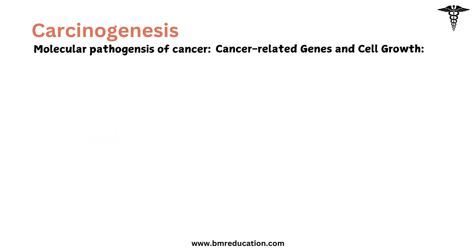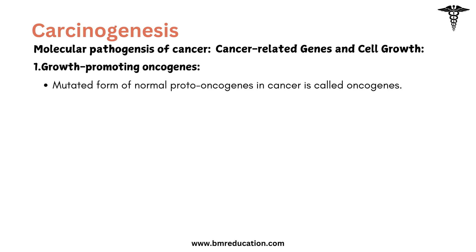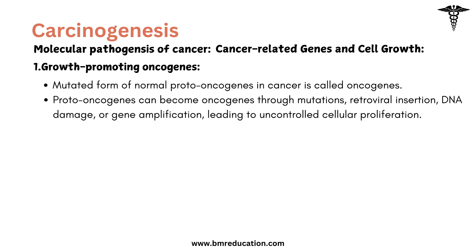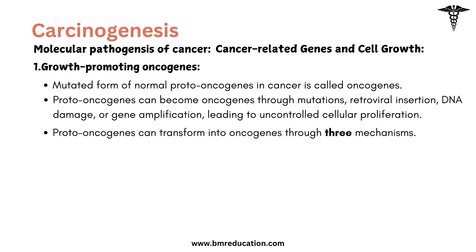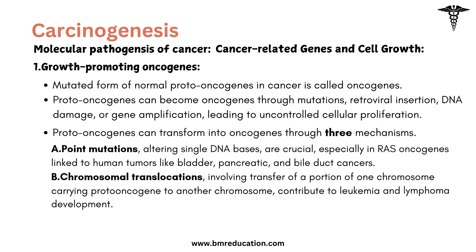Now let's study genes related to cancer and cell growth: growth promoting oncogenes. The mutated form of normal proto-oncogenes in cancer is called oncogenes. Proto-oncogenes can become oncogenes through mutations, retroviral insertion, DNA damage, or gene amplification, leading to uncontrolled cellular proliferation. Proto-oncogenes transform into oncogenes through three mechanisms: point mutations, chromosomal translocations, and gene amplification.